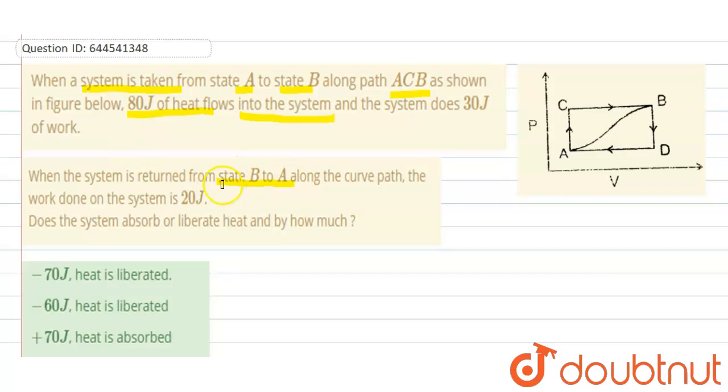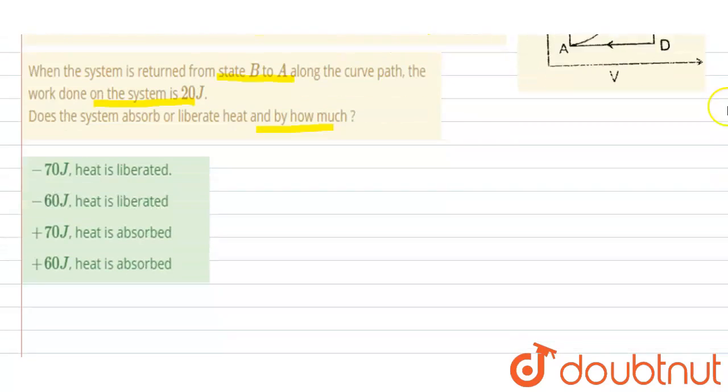is returned from state B to A along the curve path, the work done on the system is 20 joules. Does the system absorb or liberate heat and by how much? So we need to find out the heat liberated or absorbed by the given conditions.